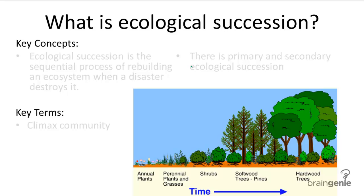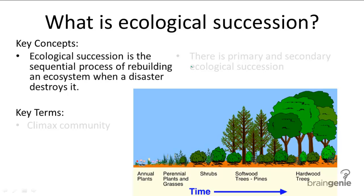Such destruction would require the rebuilding of the ecosystem from square one, and this is called ecological succession. There are two types of ecological succession — primary and secondary — the differences of which we are discussing in the next video.